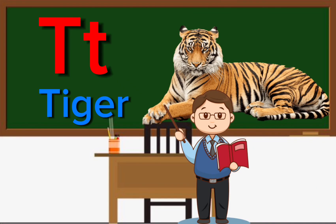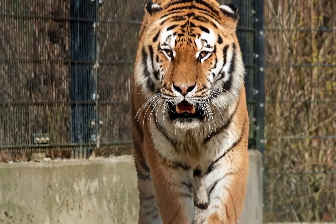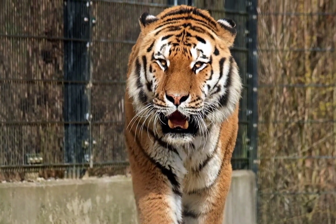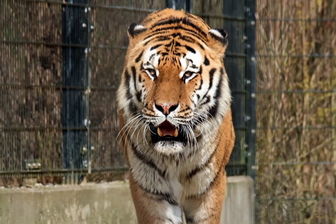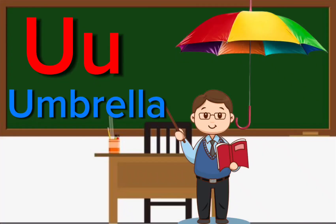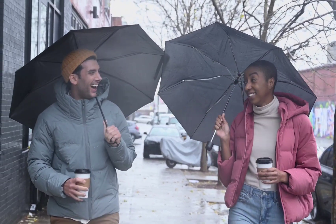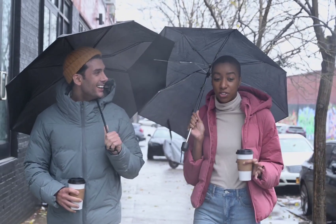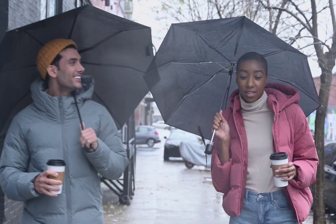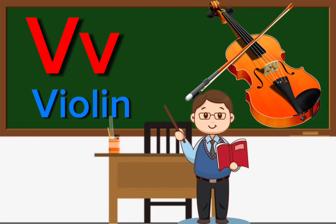T is for tiger. U is for umbrella. V is for violin.